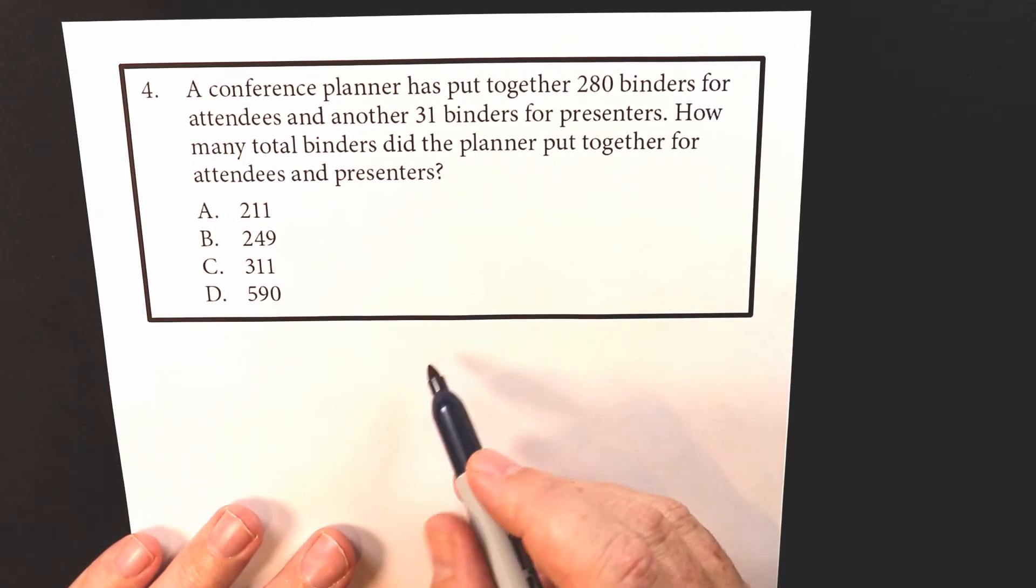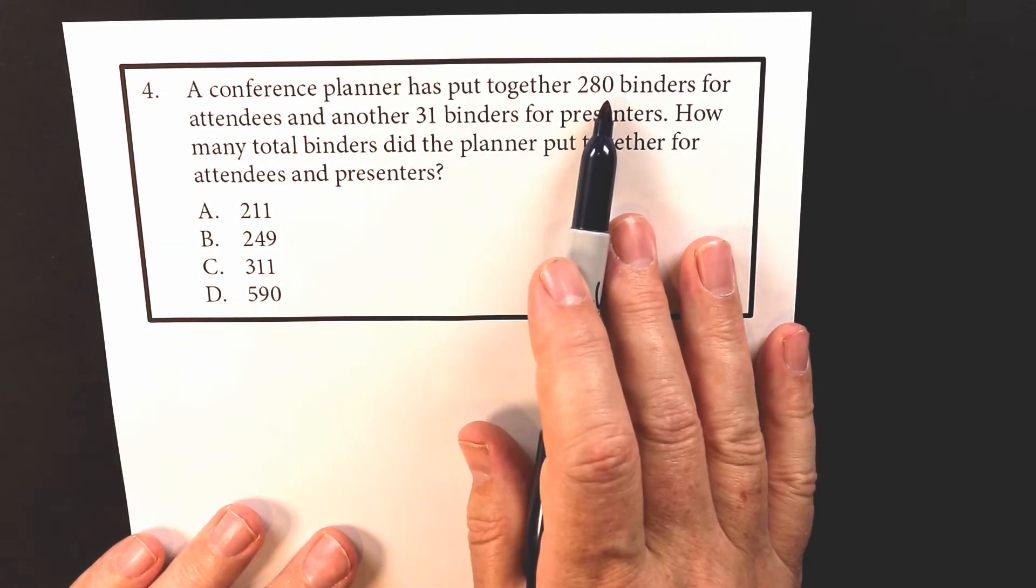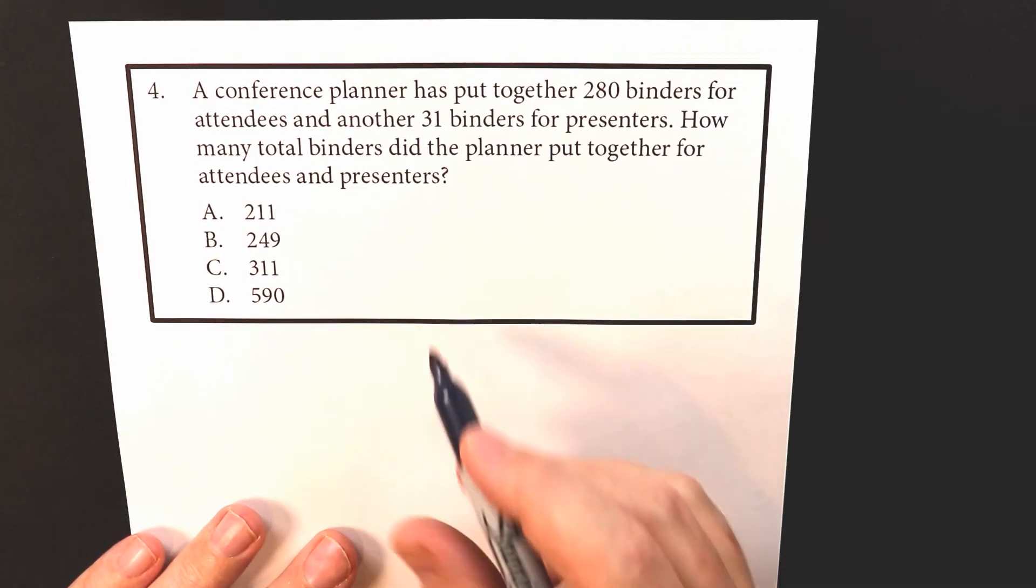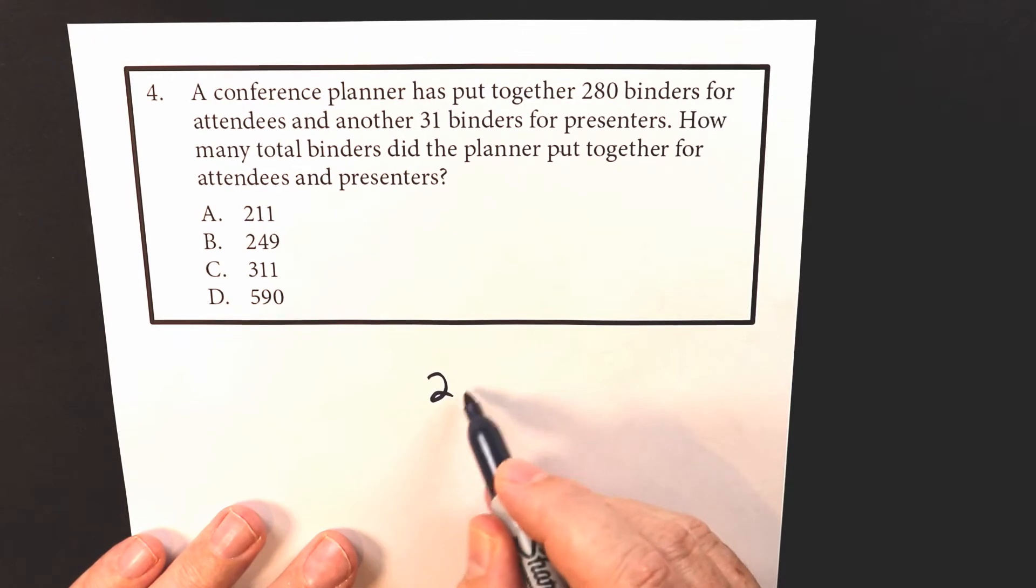So again, we're going to add these together. So anytime I have a big number and a smaller number, like this has three digits, this one has two, I like to put the one with the more digits on the top. So it's 280.